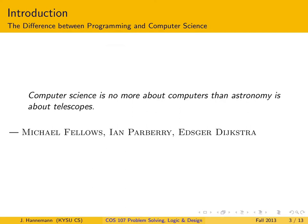There is a distinct difference between programming and computer science. There is a relationship, certainly. But this quote probably captures it best: Edsger Dijkstra says that computer science is no more about computers than astronomy is about telescopes. I have a very good friend who is the director of the student observatory at the University of Kentucky, and he of course knows a whole lot about telescopes. However, that's not the main point of astronomy. Astronomers use telescopes to look at faraway objects to figure out how the universe is made up.